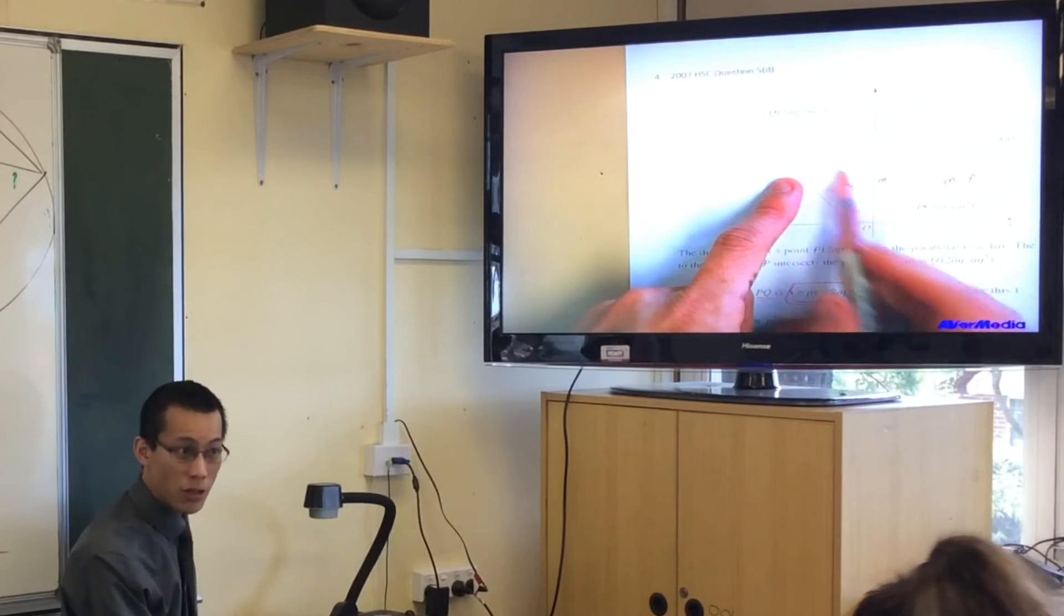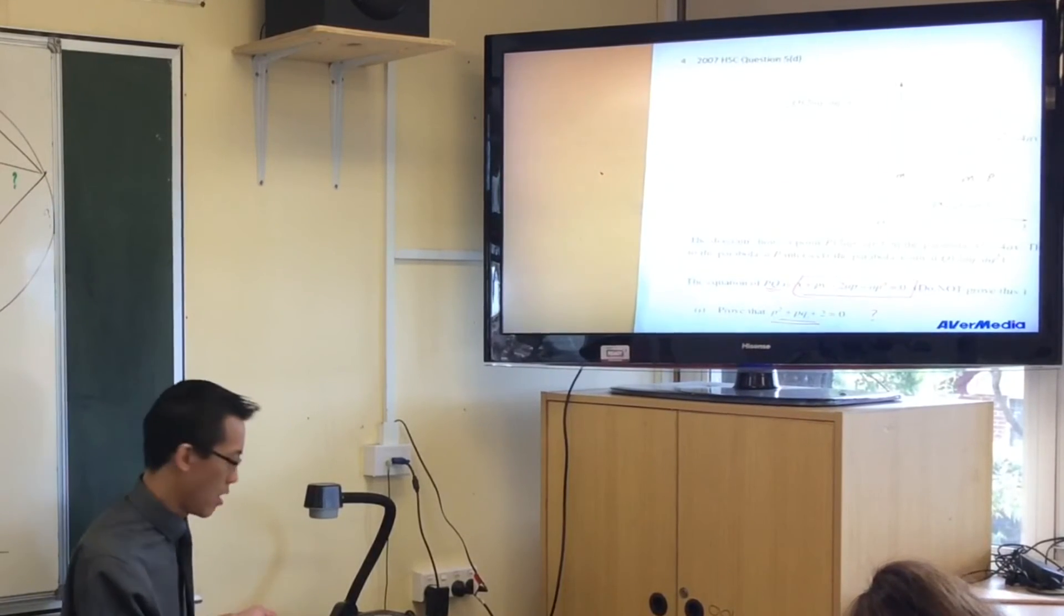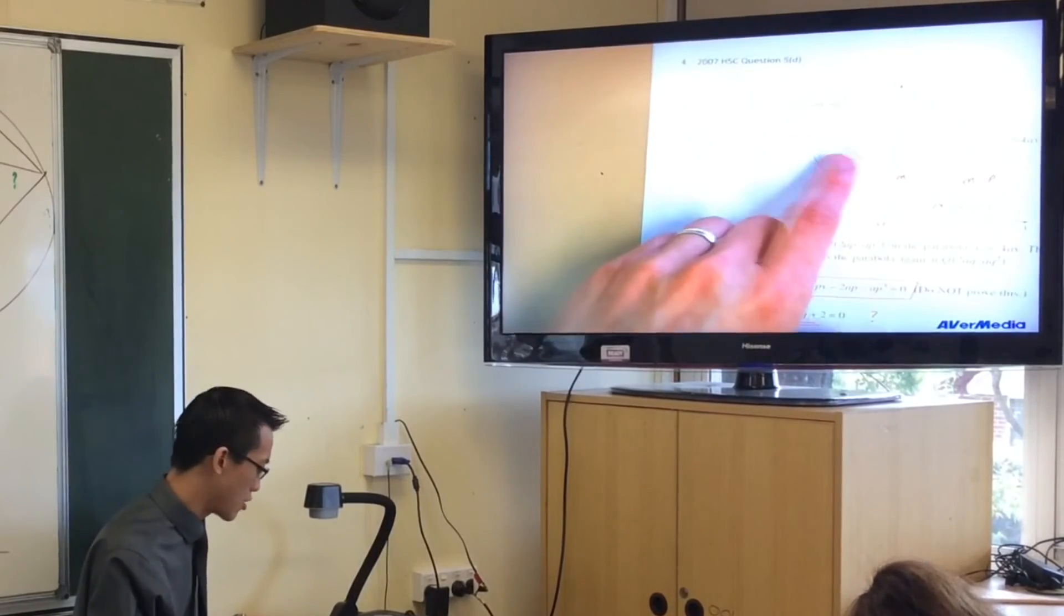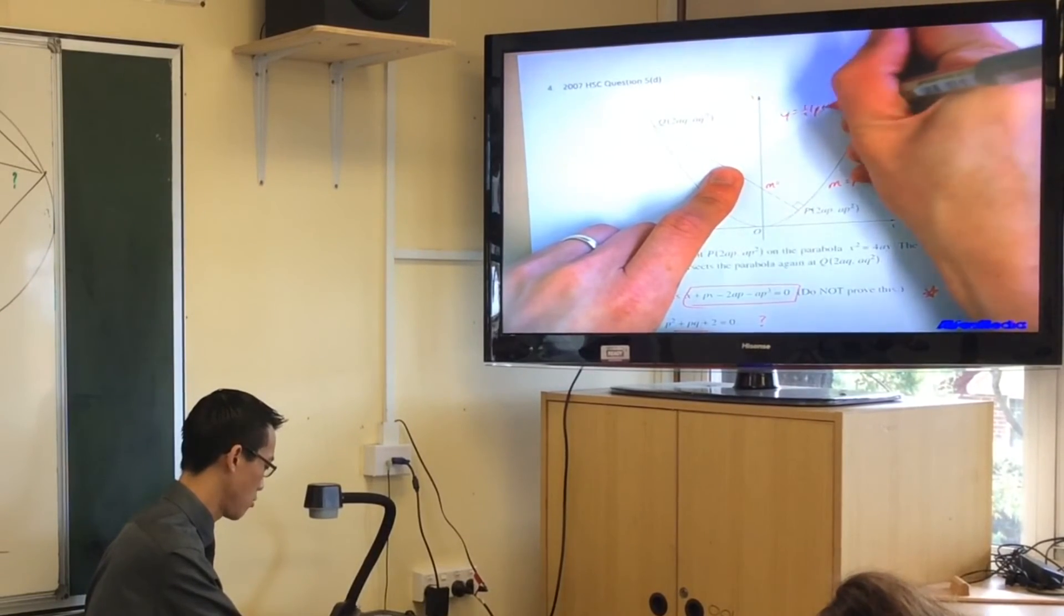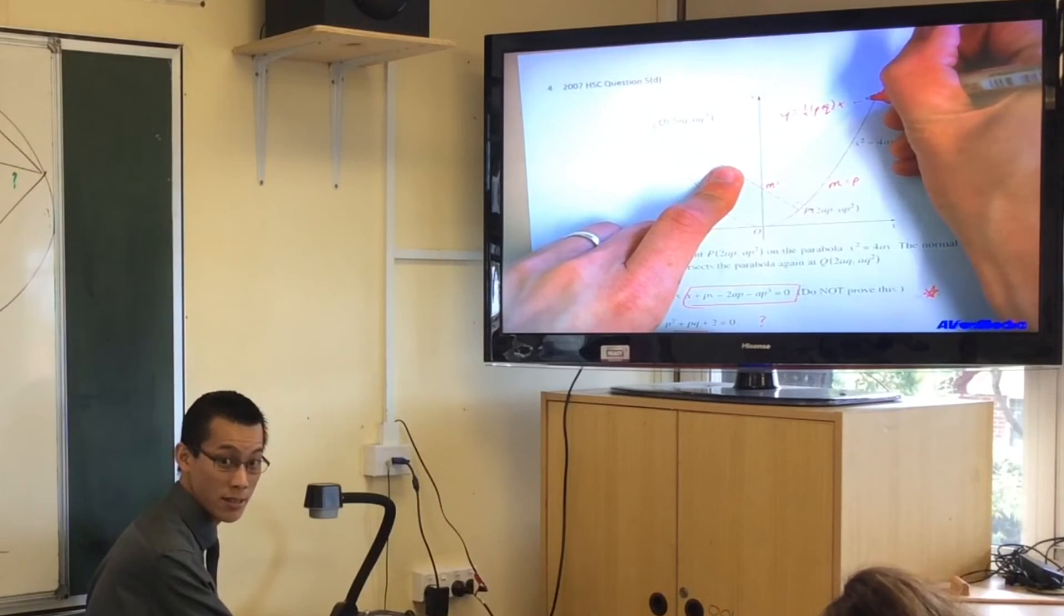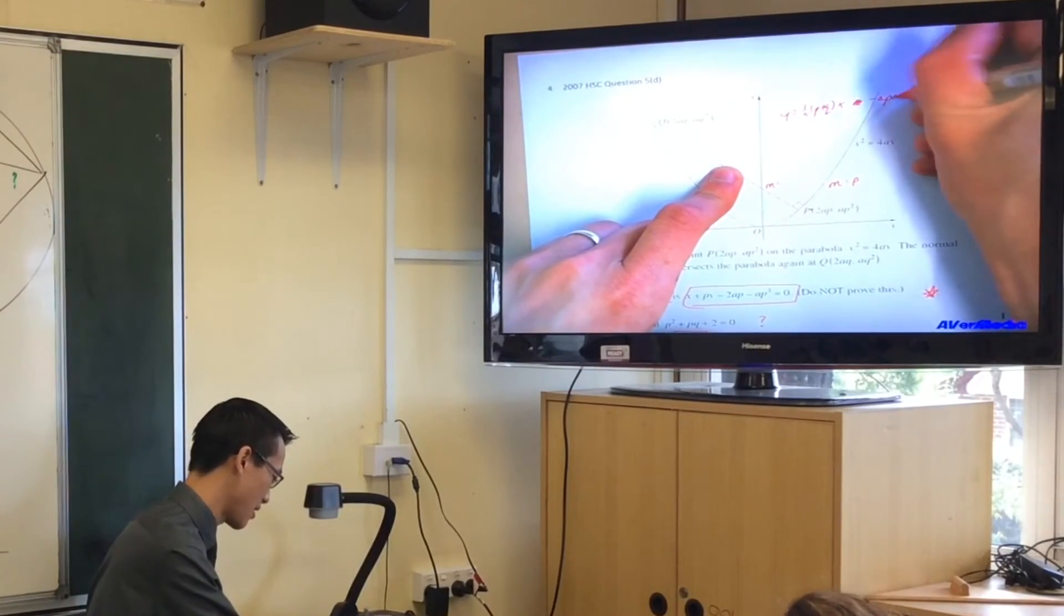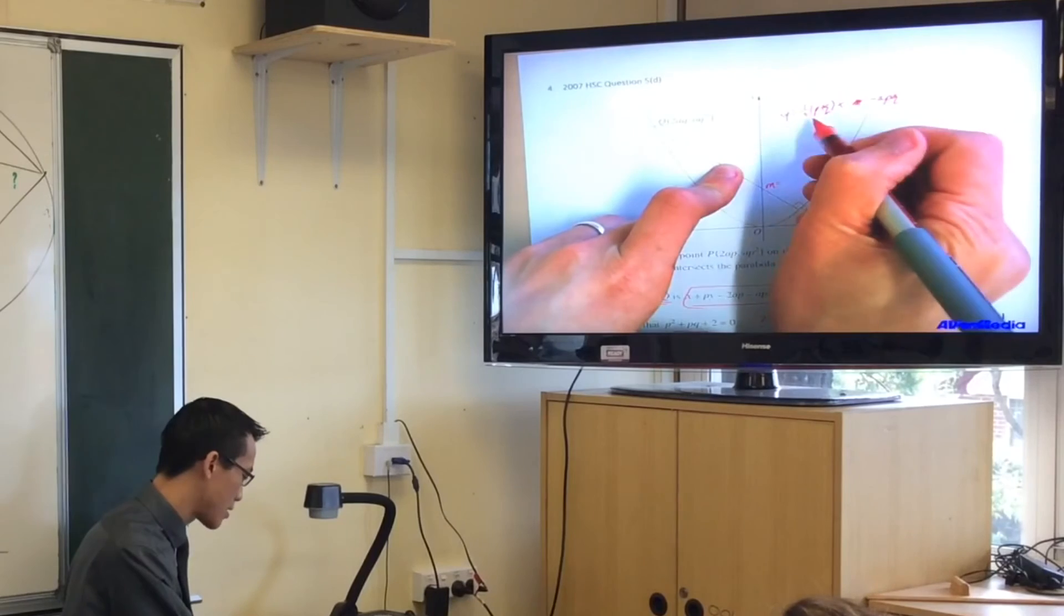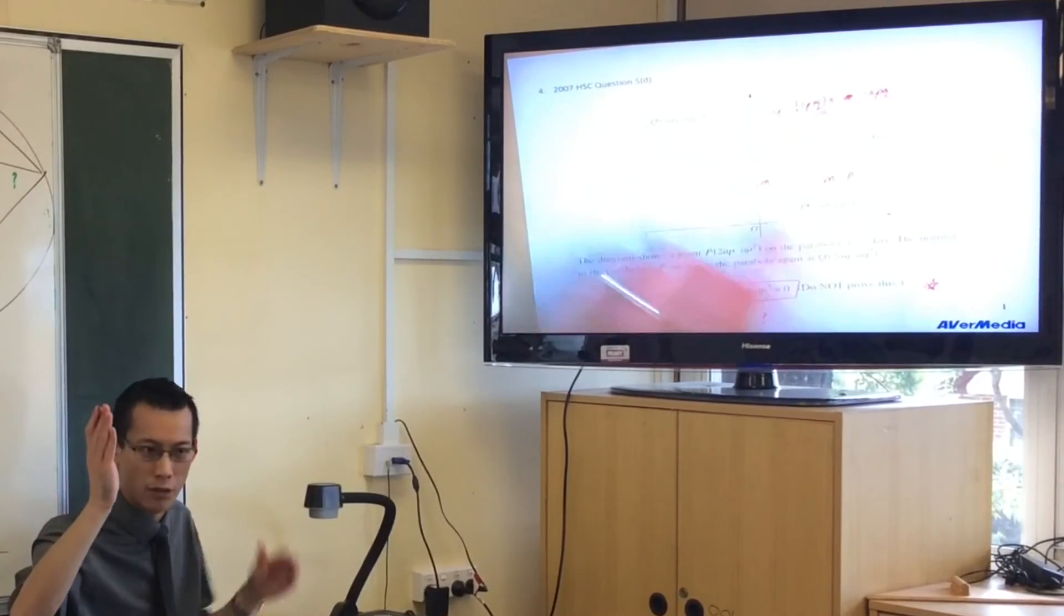It's the average of the gradient at P and the gradient at Q. Good, because by definition, admittedly, you might actually have to do a little bit of work to get there. You may have to use the gradient formula, right? But we know that the equation of this chord, like we've rehearsed this before, is Y equals half P plus Q times X minus APQ. Okay, now, because I can see there's the gradient, right? And what that actually means is it's the average of the gradient at P and the gradient at Q.